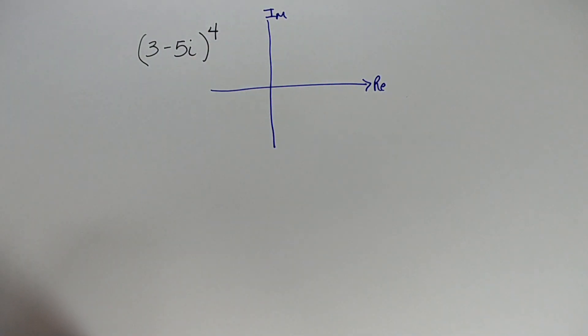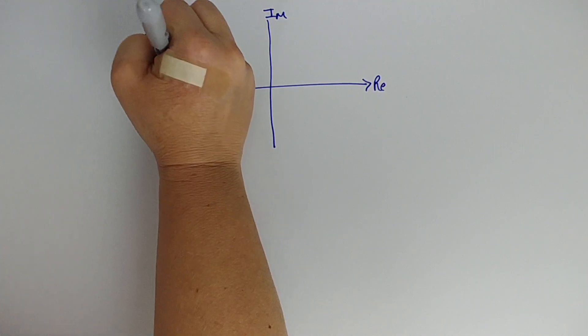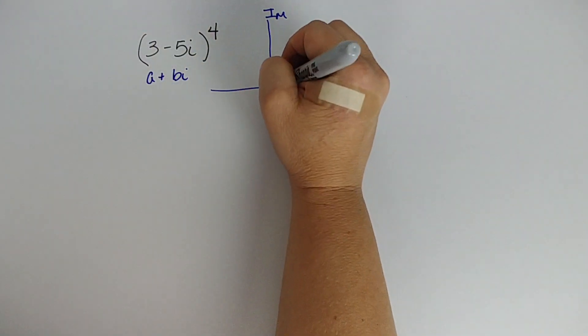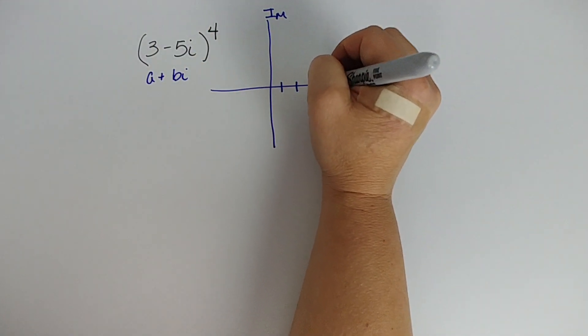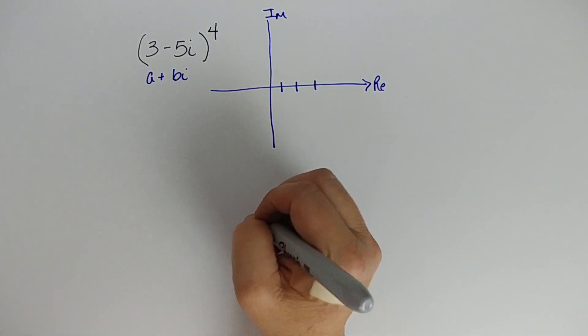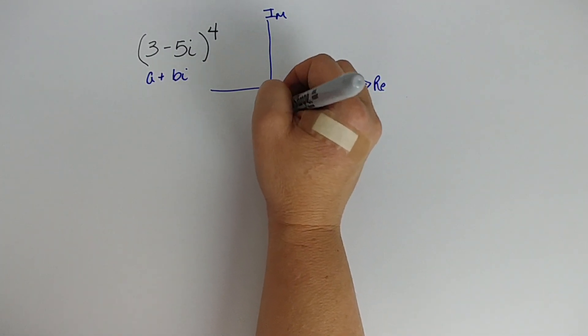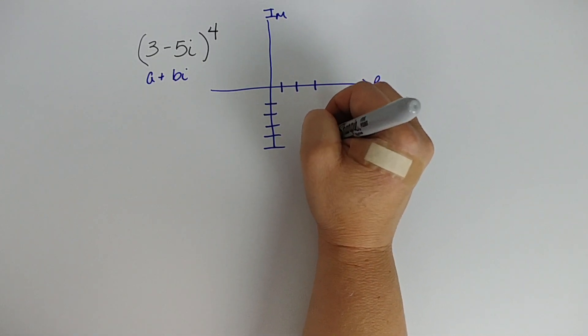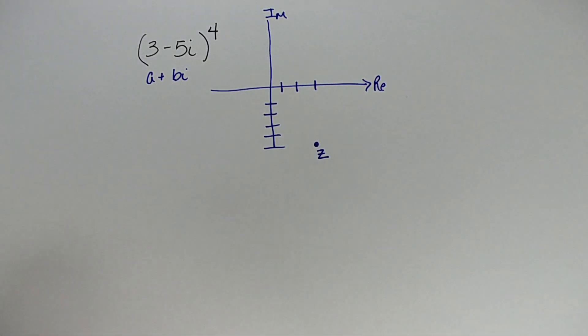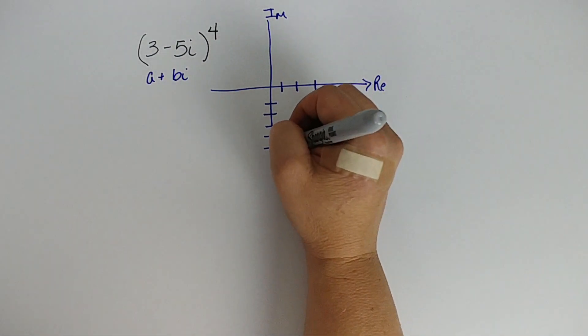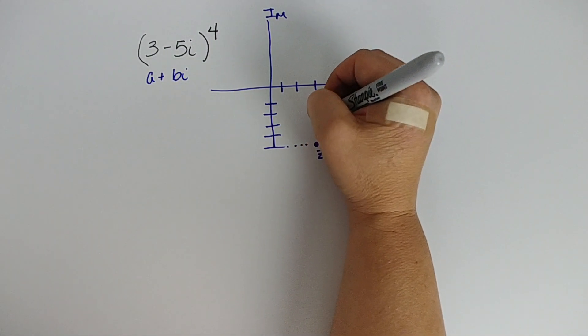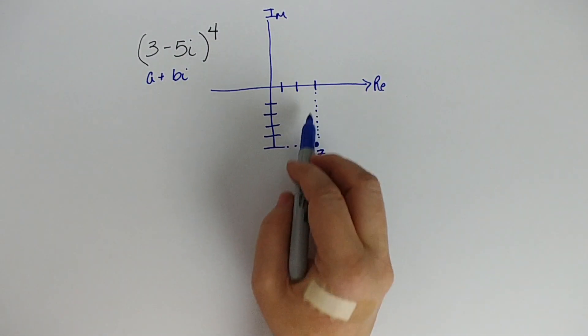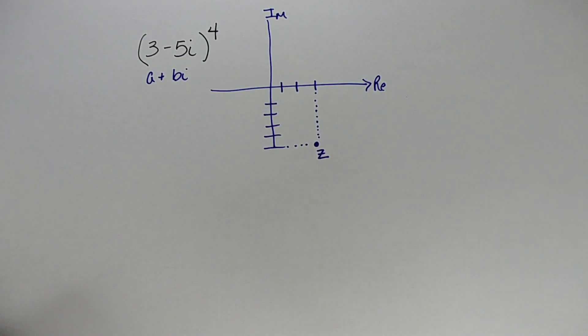Here is our real plane and here's our imaginary. We need the number three. Our a plus bi, our a goes three in the real direction, the positive three, and negative five in the imaginary direction. So that is our complex number z, and it is written in rectangular form, because we have a horizontal distance and a vertical distance that gets us there.